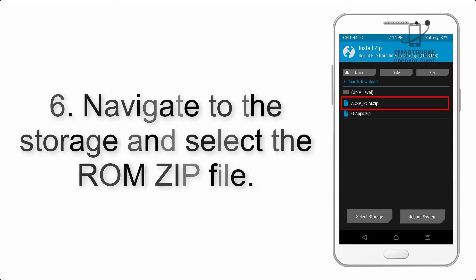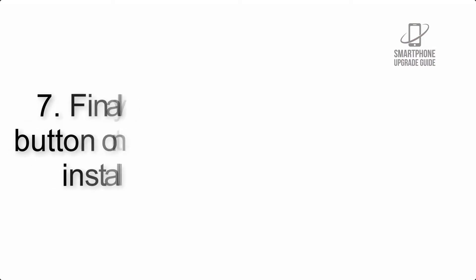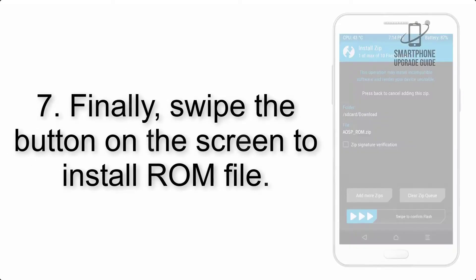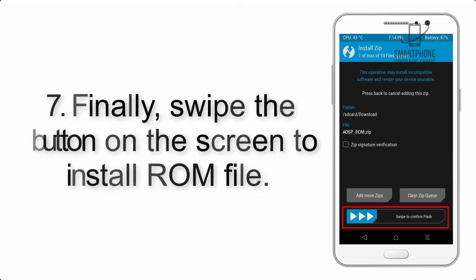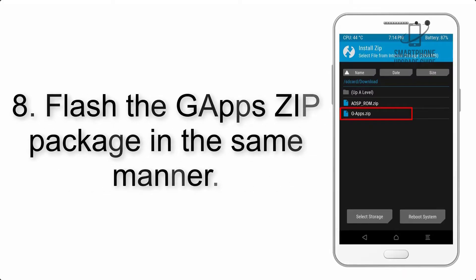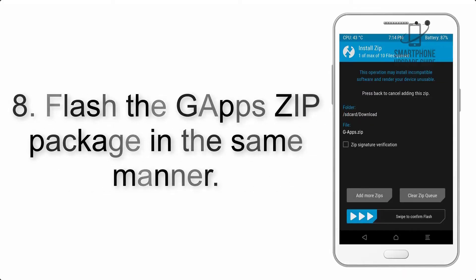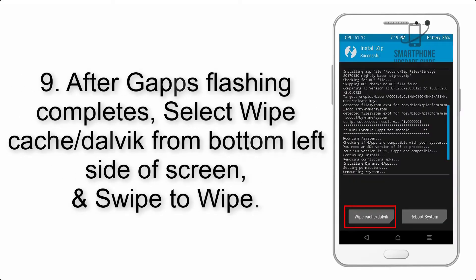Step 5: Go back to the recovery main screen and tap on the Install button. Step 6: Navigate to the storage and select the ROM zip file. Step 7: Swipe the button on the screen to install the ROM file. Step 8: Flash the GApps zip package in the same manner.